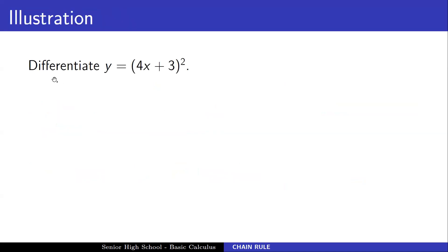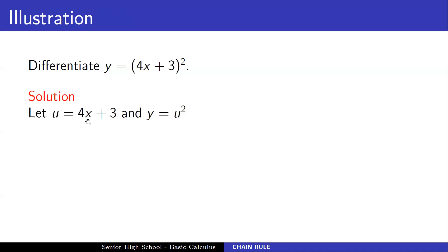Let's have an illustration. Differentiate y = (4x + 3)². We let u be the inner function, so u = 4x + 3, and by substitution y = u². We differentiate: du/dx = 4, and dy/du = 2u.